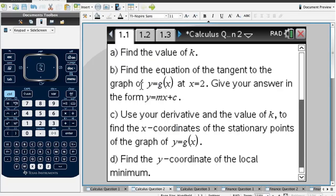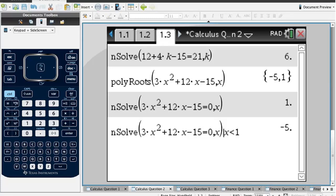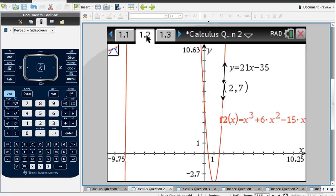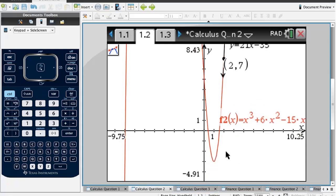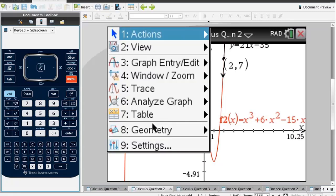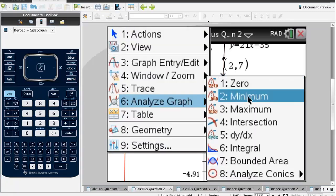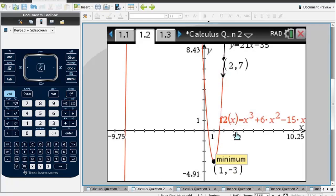Find the y-coordinate of the local minimum. We could sub both of these x-coordinates into the original equation and see which y value is smaller. Or the easiest thing would be to use the graph. Our minimum is somewhere down here. Menu, analyze graph, minimum. We have to pick a lower bound and an upper bound, and there it is. The y-coordinate of the local minimum is negative 3.